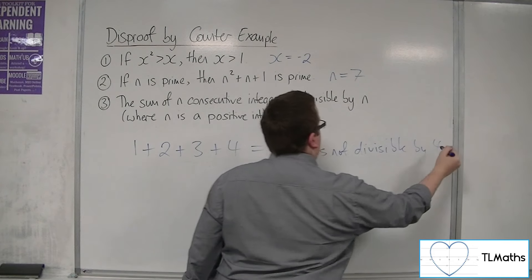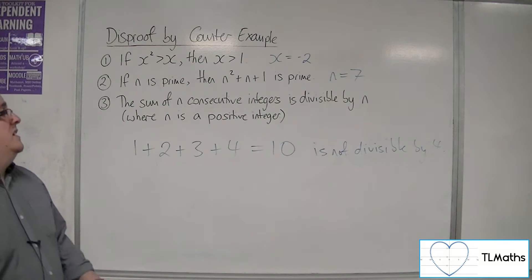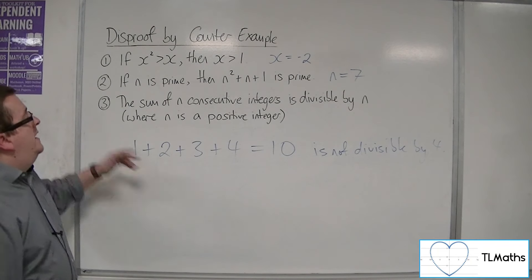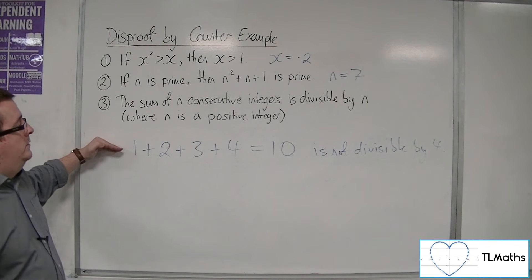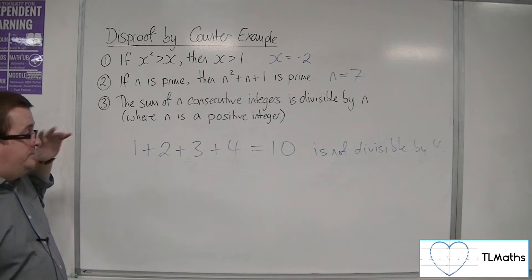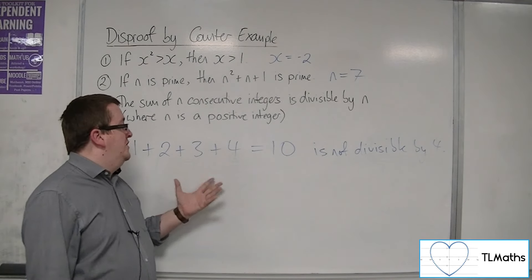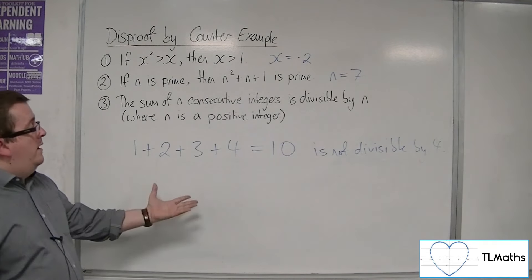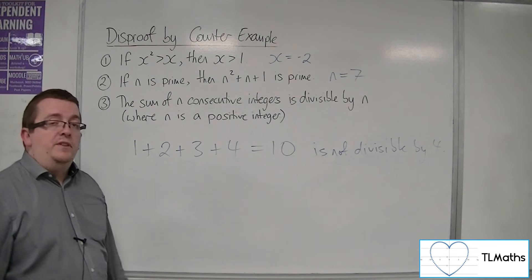So there. That was very quick. One example where number 3 fails. So I found 4 consecutive integers that where I added them together, I don't get a number that's divisible by 4.